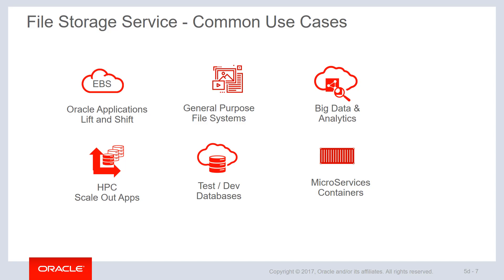Some of the common use cases for file storage service include lift-and-shift applications. In fact, EBS or the eBusiness suite is one of the primary driving factors behind rolling out this particular service, so that shared storage required at the application layer can easily be facilitated by FSS. For high performance compute or HPC scale-out applications, using a high-performance, high-throughput shared storage such as FSS would facilitate data distribution across all nodes in an HPC cluster. Another very popular use case is microservices via containers. Working with Docker and Kubernetes or other containerized services, you're able to attach a single file system mount across multiple worker nodes in a container cluster and access a single shared set of content across all containers on all of those hosts.